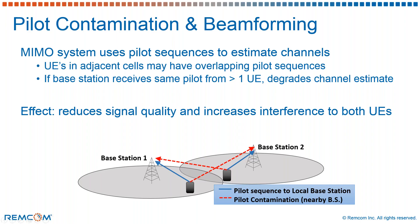The problem that occurs is that the base station receives the same pilot signal from both devices and thinks that they're essentially the same device. When it then forms its beam back to what it thinks is one device, it's actually diverting some of its energy accidentally to the second device, and also degrading some of its calculations, reducing its beam to the intended device.